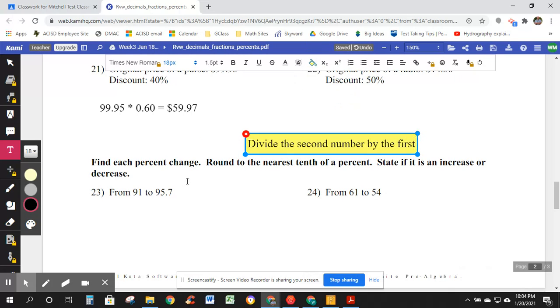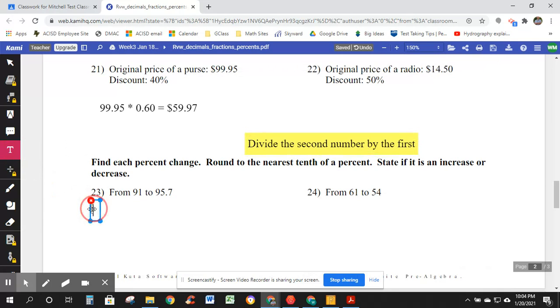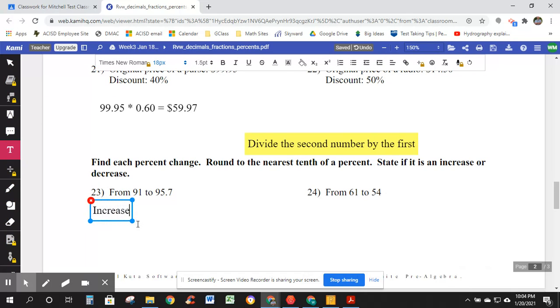Let's see what he means. From 91 to 95.7. Find each percent change. So what percentage changes from 91 to 95.7? State if it is an increase or a decrease. Well, I can see that. 91 to 95.7, this is an increase. Increase. And it says divide the second number by the first. So from 91 to 95.7, 95.7 divided by 91. That comes to 1.0516.